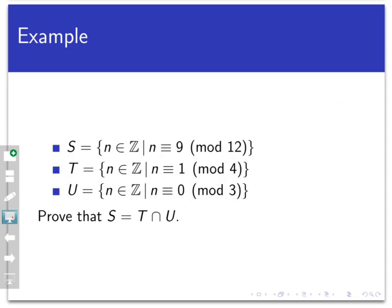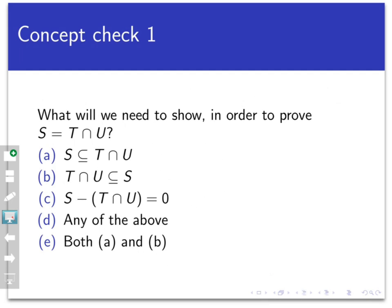What we're going to prove is that S equals the intersection of T and U. For a concept check, what are we going to need to show ultimately in order to prove that those two sets are equal? The answer is both directions: I need to prove that S is a subset of T intersect U, and then turn around and prove the subset inclusion works the other direction as well.